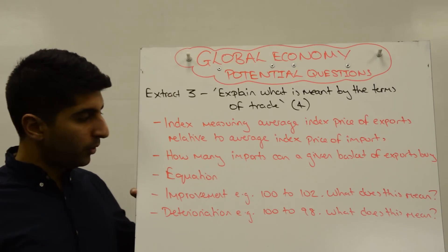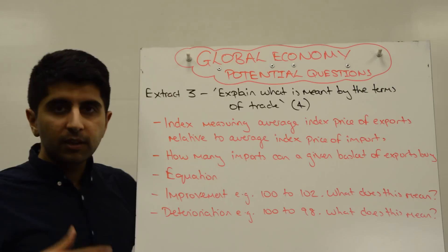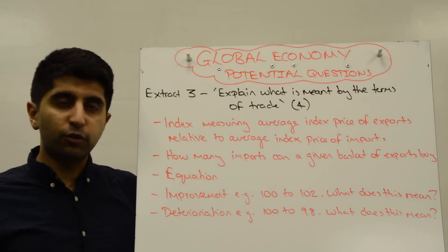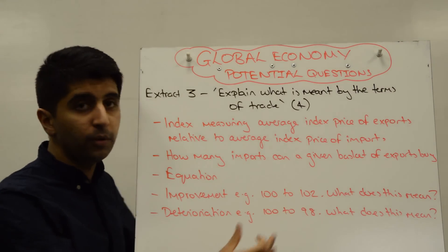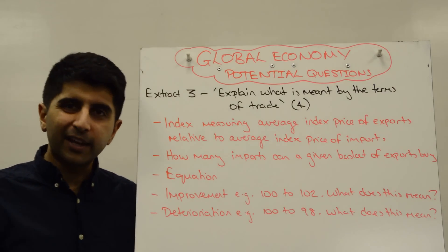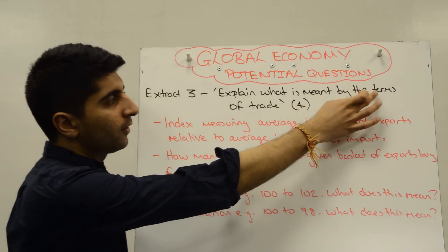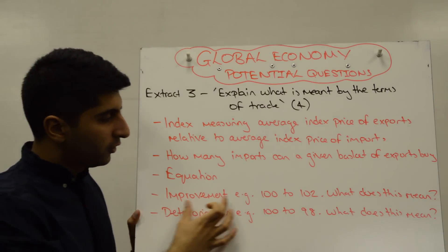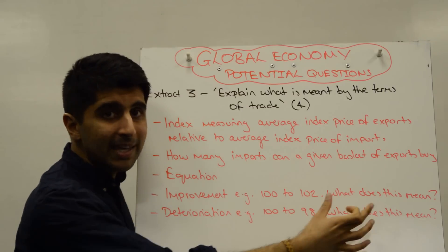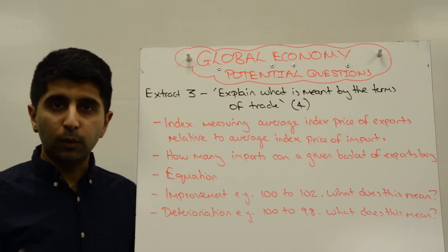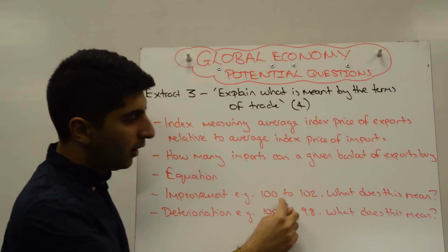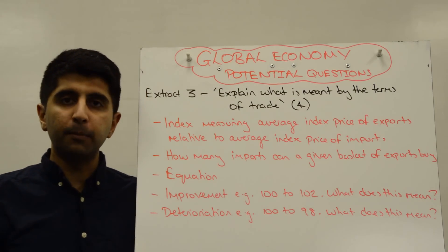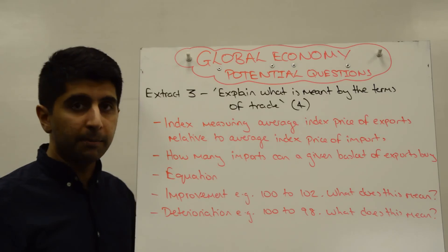So that's three distinct points. You need to make one more. Give an example of what an improvement in the terms of trade could be — so from 100 to 102. You might want to write how that could happen, but remember, you just want to explain the terms of trade. Showing an improvement and explaining what that means demonstrates understanding. So 100 to 102 means that a given basket of exports can buy 2% more imports than it could in the base year.